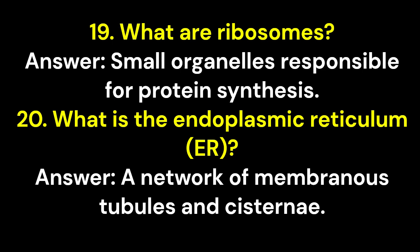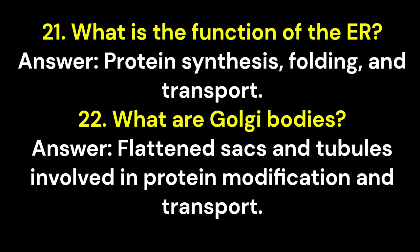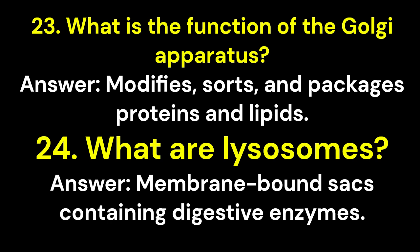19. What are ribosomes? Answer: Small organelles responsible for protein synthesis. 20. What is the endoplasmic reticulum, ER? Answer: A network of membranous tubules and cisternae. 21. What is the function of the ER? Answer: Protein synthesis, folding, and transport. 22. What are Golgi bodies? Answer: Flattened sacs and tubules involved in protein modification and transport. 23. What is the function of the Golgi apparatus? Answer: Modifies, sorts, and packages proteins and lipids.